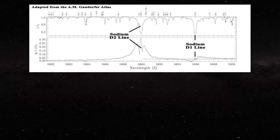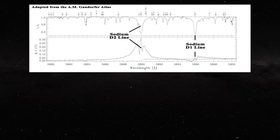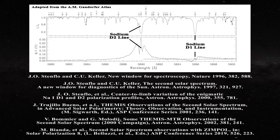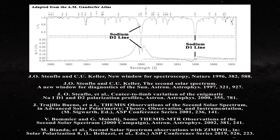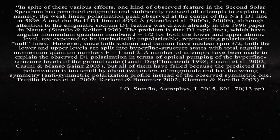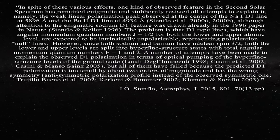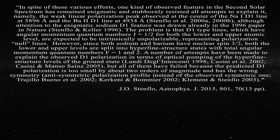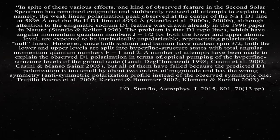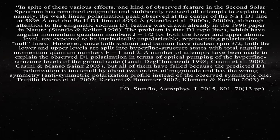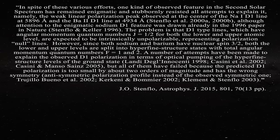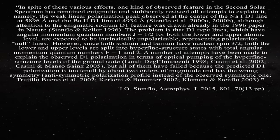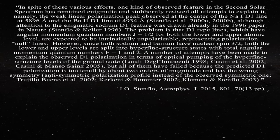The problem of the sodium D1 line has been known for nearly 30 years as highlighted in numerous publications and several attempts have been made to explain why this line can in fact be polarized. Progress up to 2015 is best summarized by this powerful quotation. In spite of these various efforts one kind of observed feature in the second solar spectrum has remained enigmatic and stubbornly resisted all attempts to explain it. Namely the weak linear polarization peak observed at the center of the sodium D1 line at 5896 angstroms and the barium 2 D1 line at 4934 angstroms. Although attention to the enigmatic sodium D1 feature was drawn already in the 1996 paper in Nature.